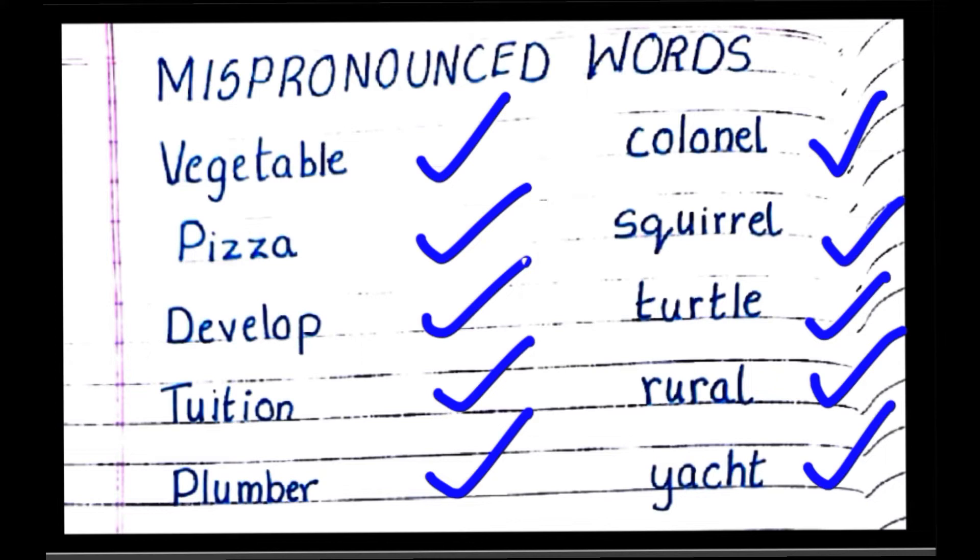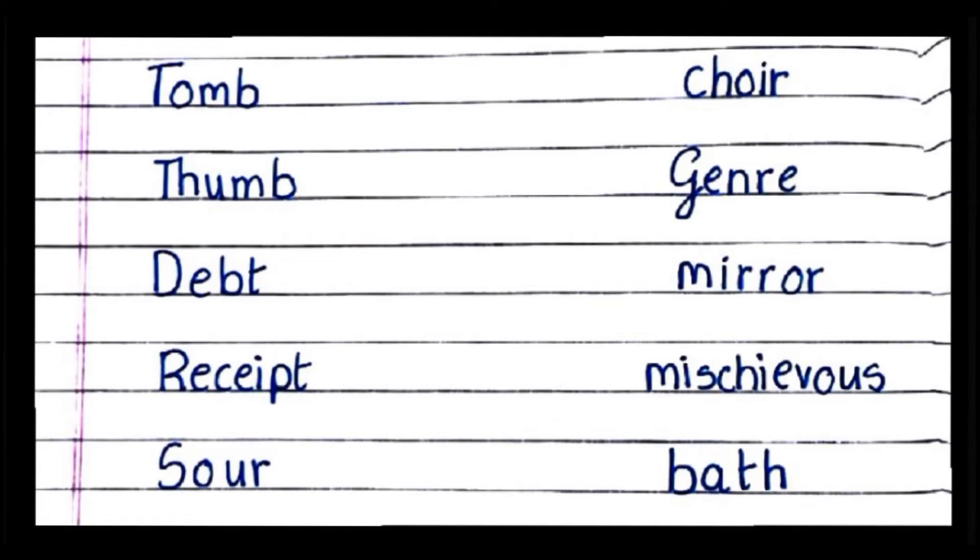Yacht, yacht. Now this one is not tomb, it is tomb, tomb. Thumb, B is silent, thumb.